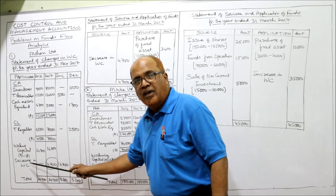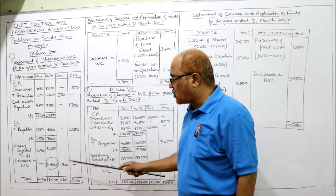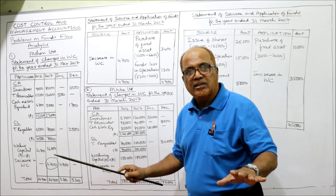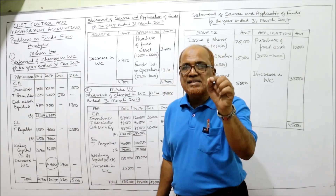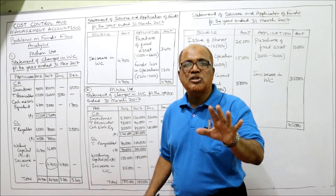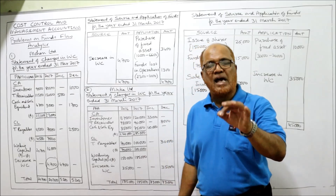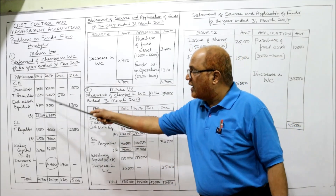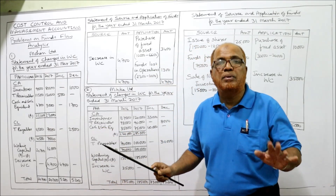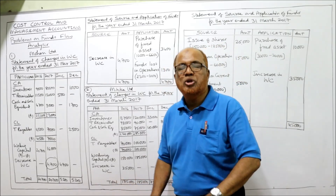We got a decrease in working capital. If you get decrease in working capital, that decrease should be taken in the increase column. So 4,700 is taken in the increase column. Now find the total — if the total of increase and decrease columns is equal, your answer is absolutely right. We got 4,700 in both, so the answer is correct.